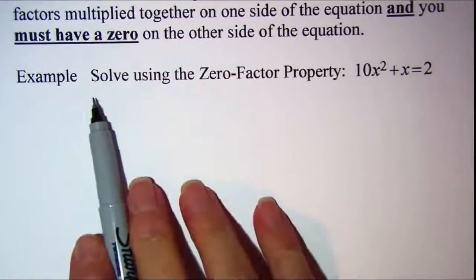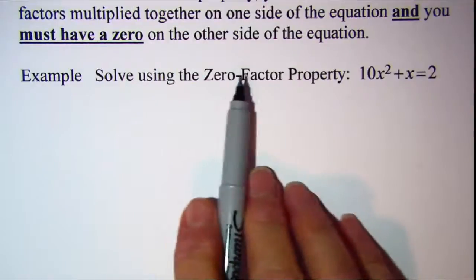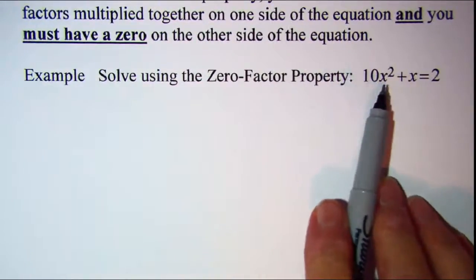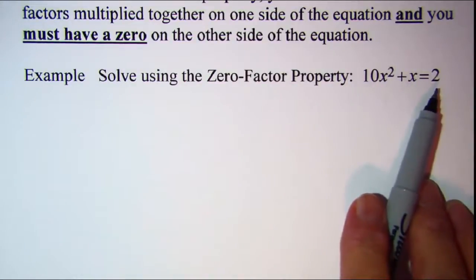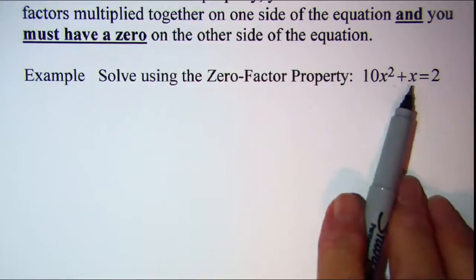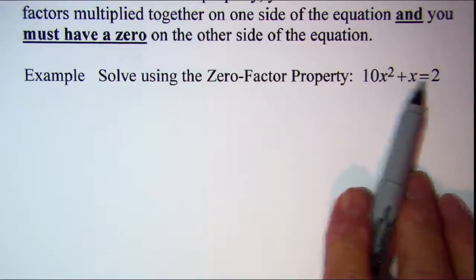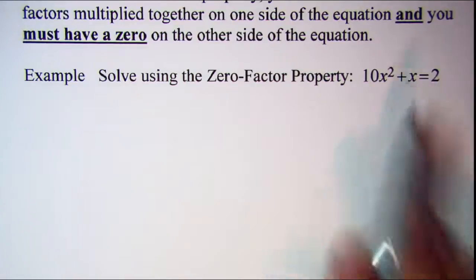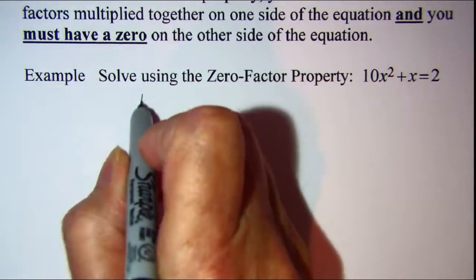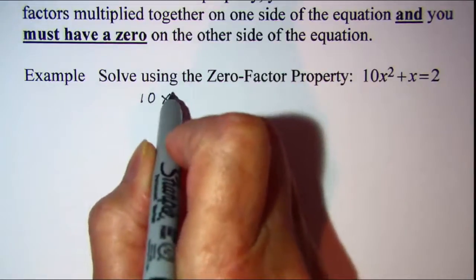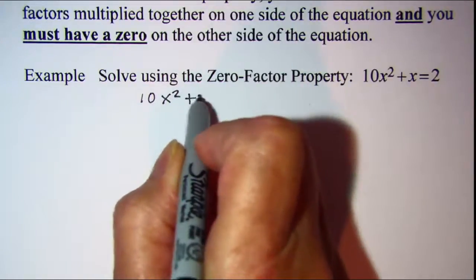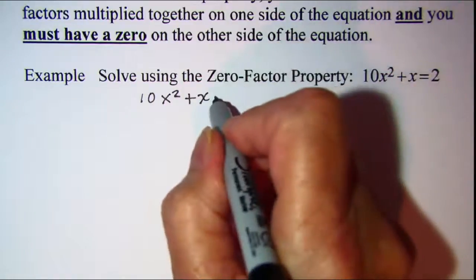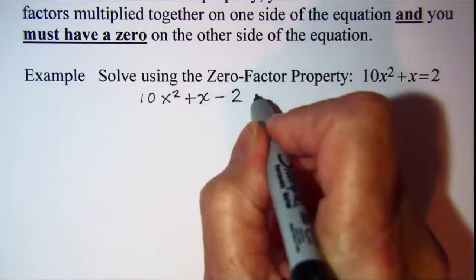Let's do an example. We are asked to solve using the zero factor property and the equation is 10x squared plus x is equal to two. In order to use our property we must have a zero on one side of the equation. So let's move this two to the left side by subtracting two from both sides, giving us 10x squared plus x minus two equals zero.